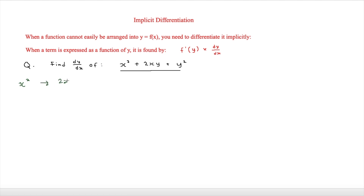The hardest term here is 2xy. Because this is a product of two different things, we are going to have to use the product rule. We can say that u equals 2x and v equals y.